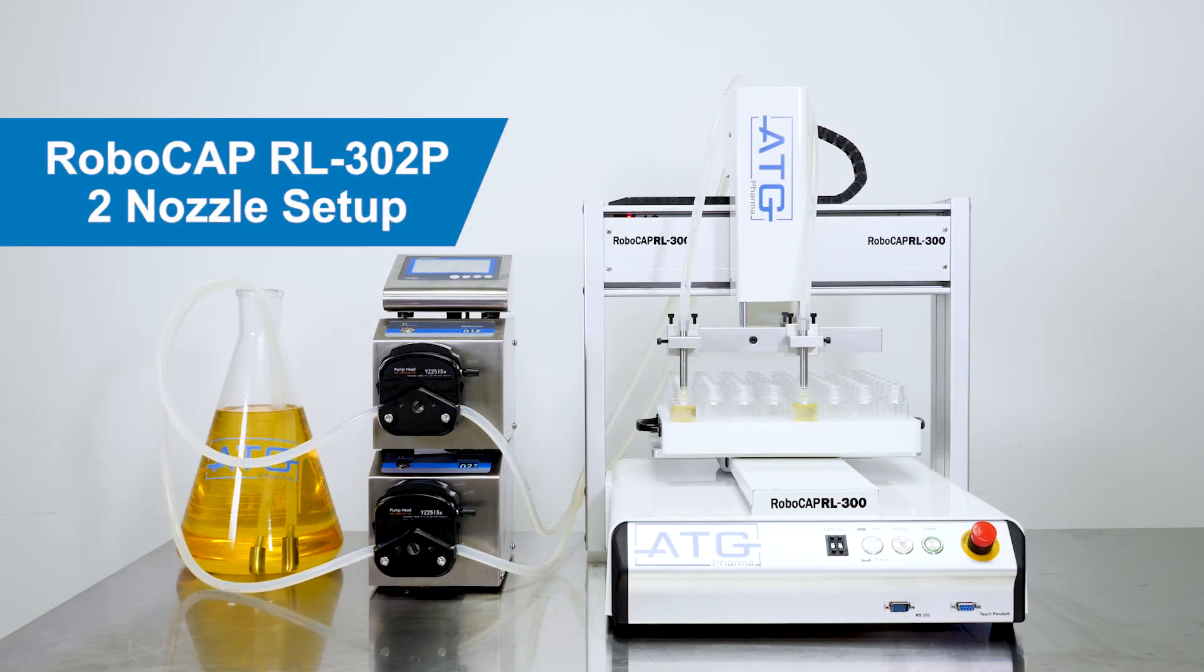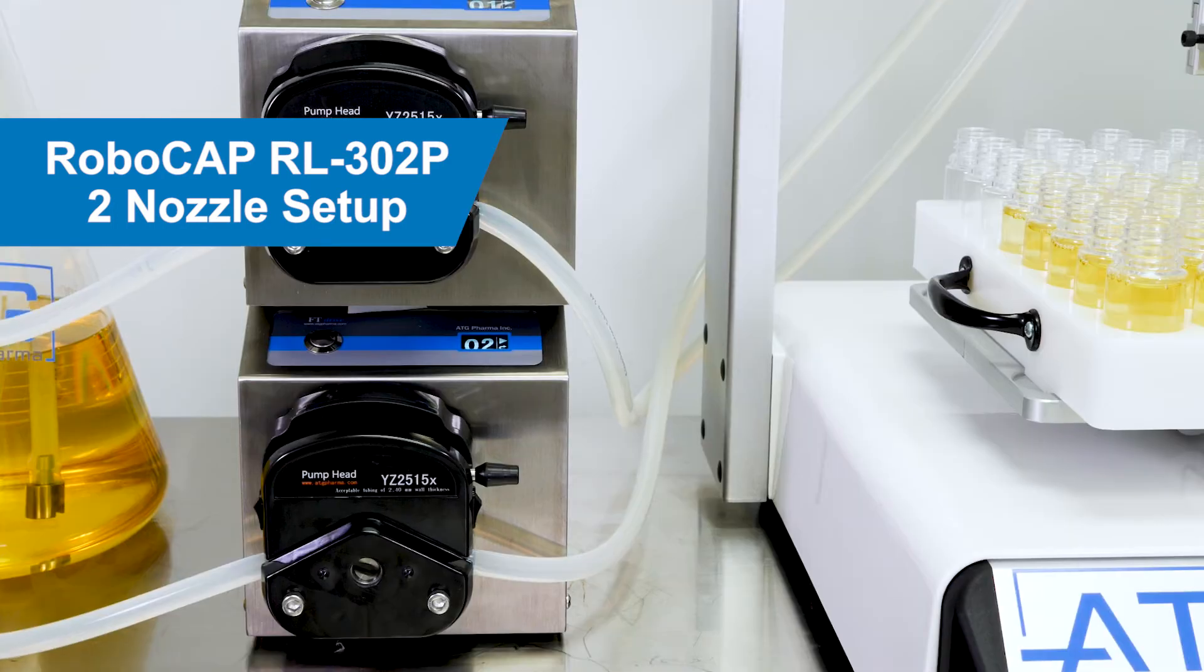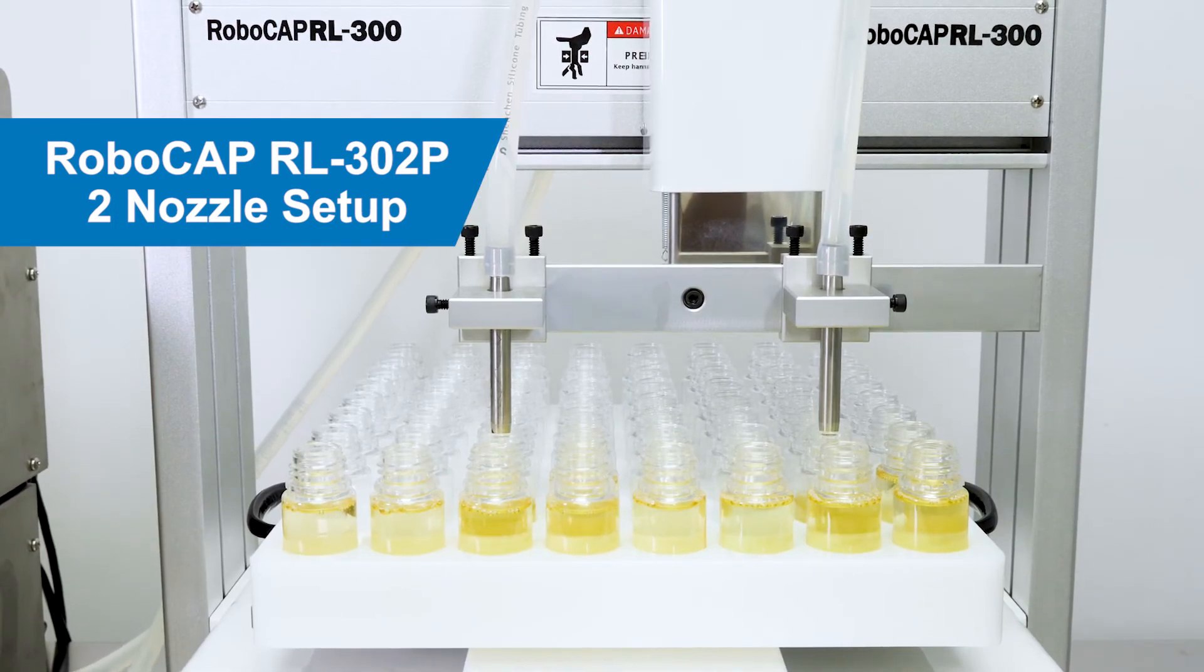Next we're going to show you a two nozzle setup. With the two nozzle setup you can get up to 1830 ml bottles an hour.